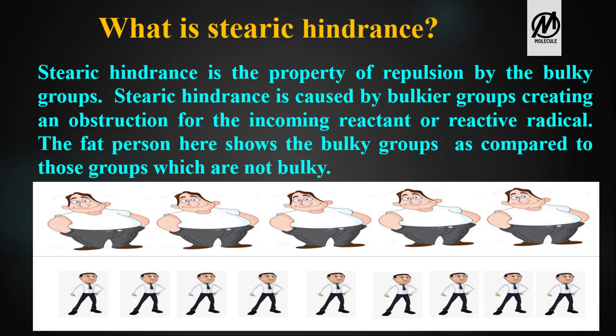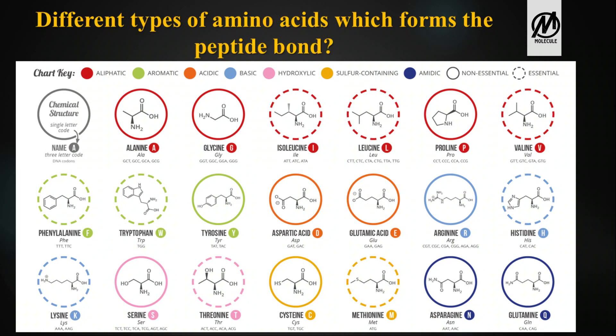To understand steric hindrance, I'll use an analogy from the Indian Railways. The lower berth is designed to accommodate four normal persons without touching each other. We can relate the berth to the tetravalency of carbon and the four persons to the atoms of carbon. Whenever a fat person comes, they take the space of two thin persons, leaving less space for the others — this causes steric hindrance, or repulsion.